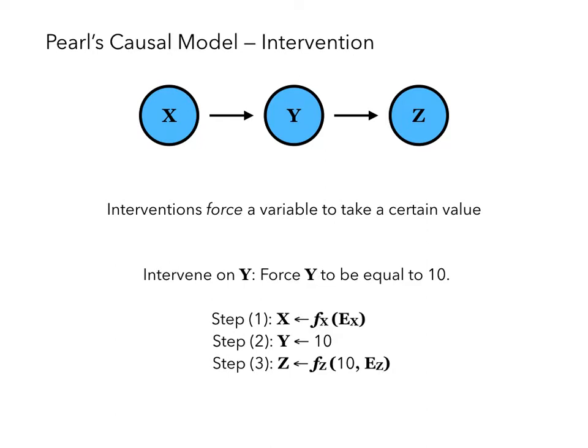The structured equation model is interesting when we consider interventions. Interventions force a variable to take a certain value. Now suppose we intervene on Y. We force Y to be equal to 10. In step 1, X is still a deterministic function of its noise variable EX. In step 2, Y is equal to 10, because we force Y to be equal to 10. In step 3, Z is still a function of Y and its noise variable EZ. Now note that intervening on Y has an effect on Z, but it does not have an effect on X. This is because Y causes Z, but Y does not cause X.